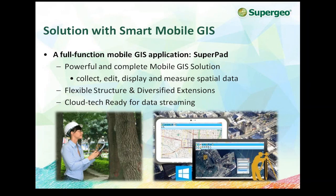Since SuperGeo is a core GIS technology provider, we provide the solution with smart mobile GIS — a fully functioning GIS application called SuperPAD. It is a powerful and complete mobile GIS solution that helps users collect, edit, display, and do quick measurement of spatial data on the field, focused on field work. It has a very simple and flexible structure with a lot of useful extensions. SuperPAD is a smart mobile GIS that is cloud tech ready — users can get data from online maps, use SuperGeo Server for data streaming, and integrate with OGC standard services.